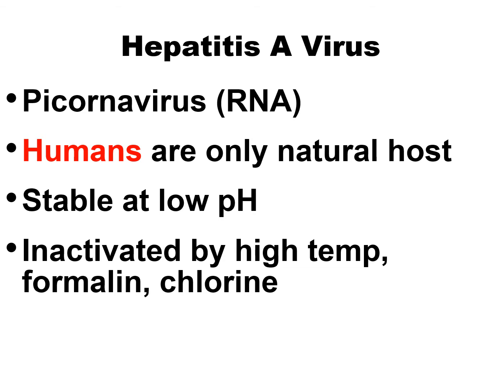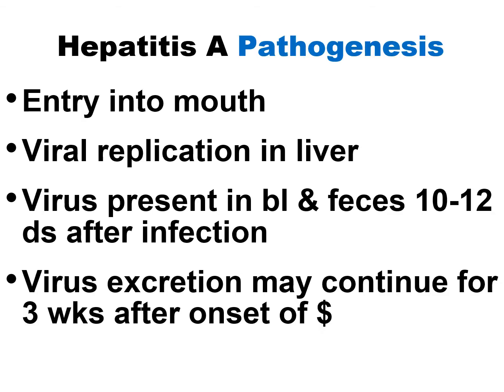Hepatitis A virus is only found in humans. It is stable at low pH and inactivated by high temperature, formalin, and chlorine. Pathogenesis: entry into the mouth, viral replication in the liver, virus present in blood and feces 10–12 days after infection. Virus excretion may continue for 3 weeks after onset of symptoms.